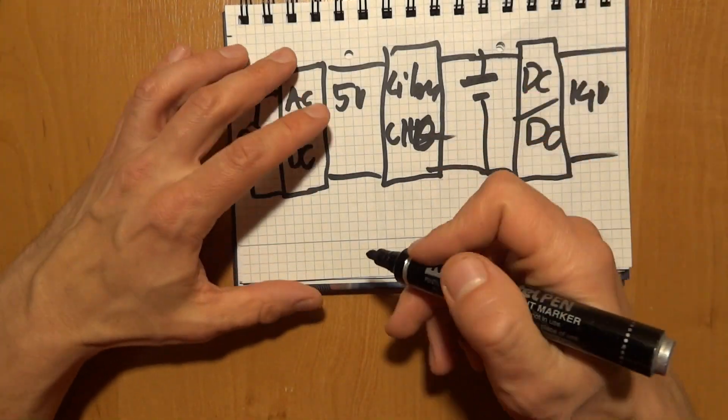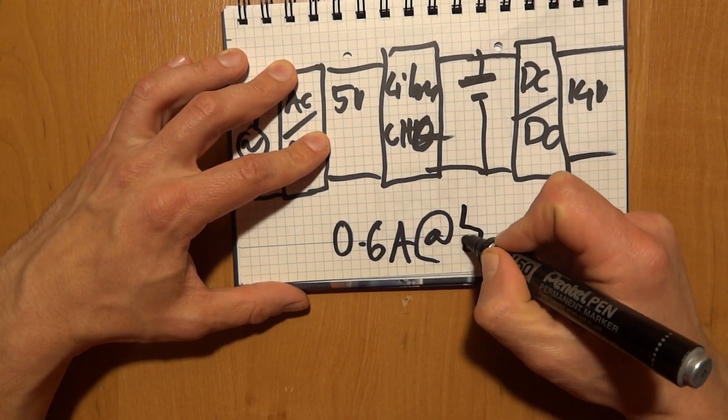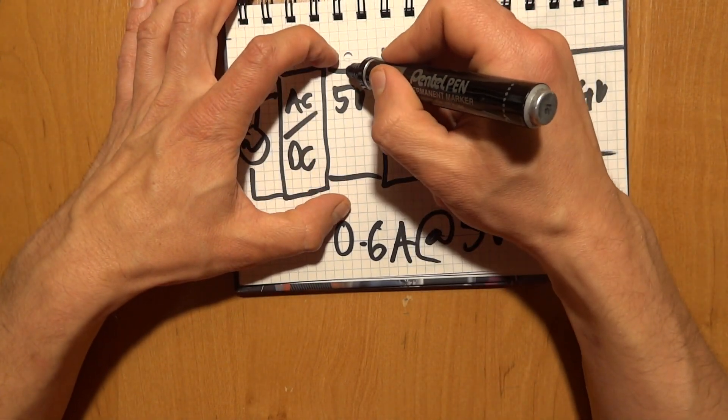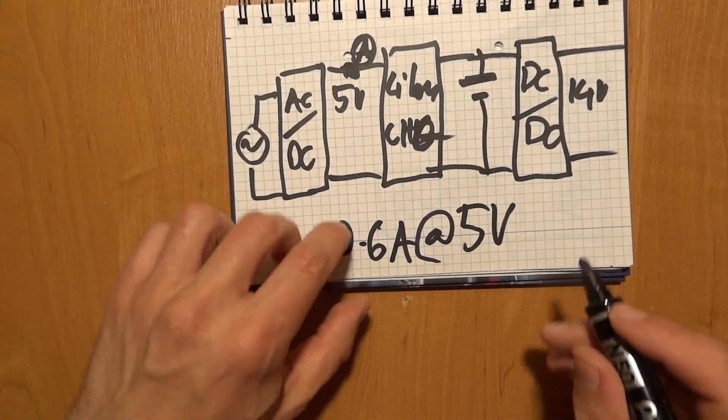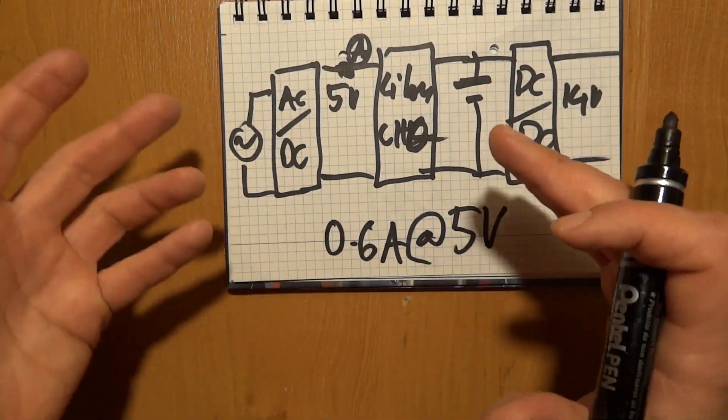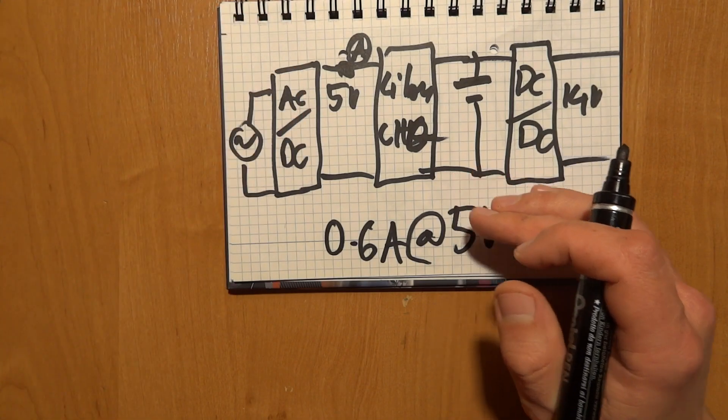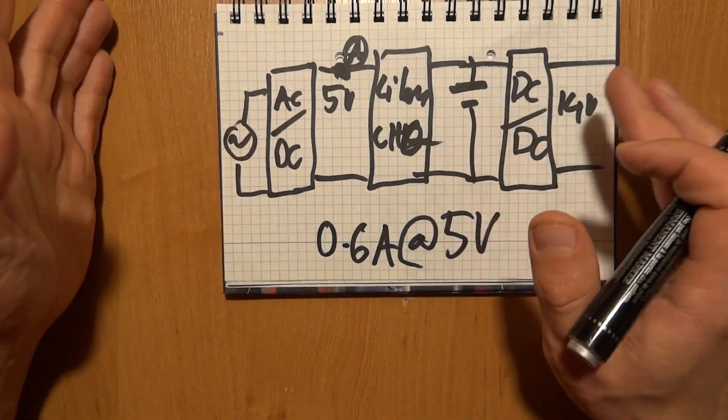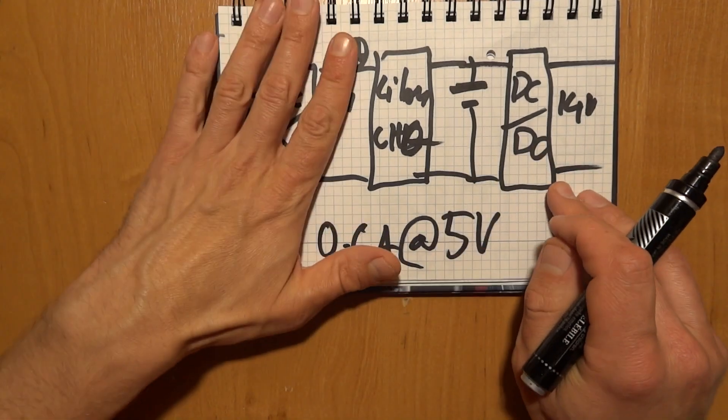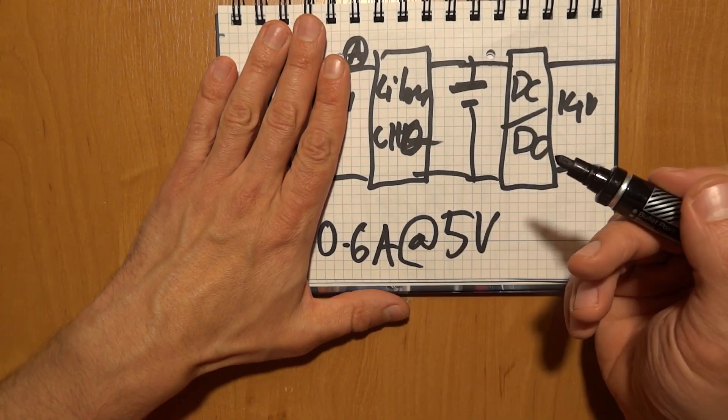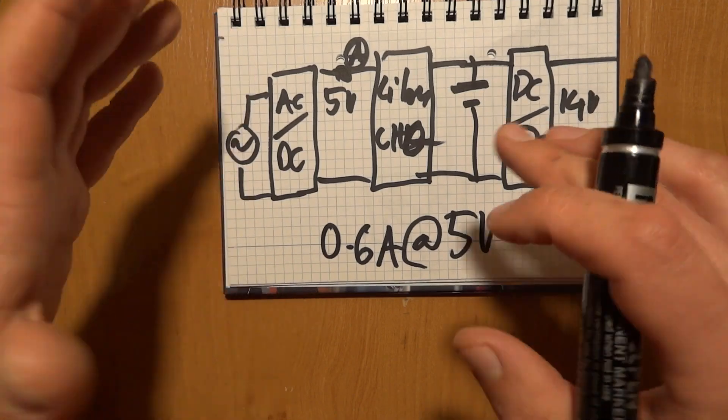So the standard consumption is 0.6 amps at 5 volts, if you measure it here. So let's put an amp meter here. So in practice, instead of what it does here on the power brick, it talks about 15 watts, that is quite a lot. In practice what it takes from here is around 3 watts, not a lot.